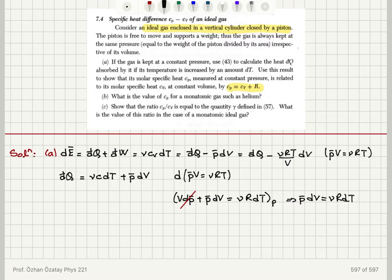So I can substitute this into d bar q. I obtain d bar q is equal to nu cv dt plus nu r dt. Now, if this is at constant pressure, this must be equal to nu cp dt. So I see that the nu's cancel, dt's cancel and I obtain the following relationship. cp is equal to cv plus r as expected.